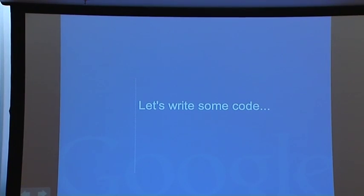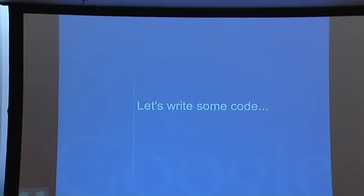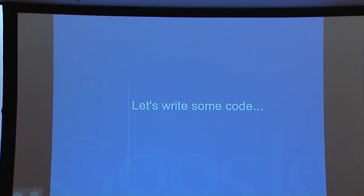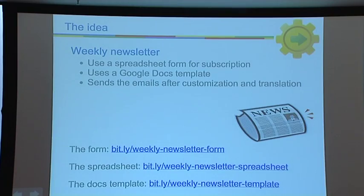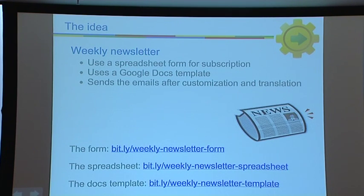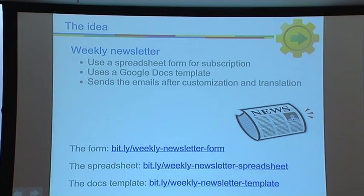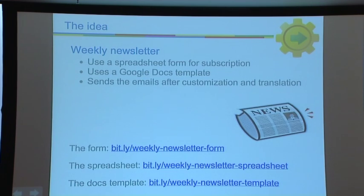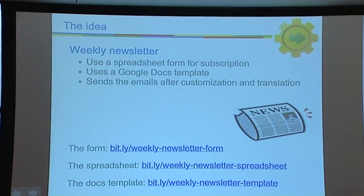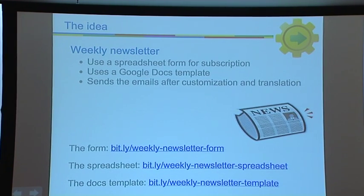Now we're going to write some longer code. We're going to see how you could solve a problem — for example, if your company had to send a weekly newsletter. The problem is you'd probably want them customized with the subscriber's first name and last name, or other custom information. We're going to try to do that using Apps Script.